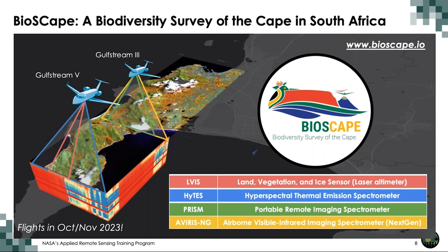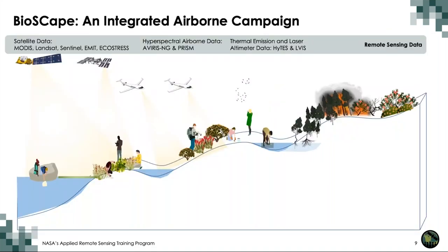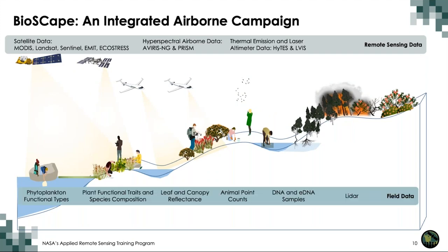BioSCAPE is an airborne campaign bringing four of the instruments you just learned about: the LVIS laser altimeter, HyTES, PRISM, and AVIRIS-NG. Those will be aboard two NASA aircraft — the Gulfstream III and the Gulfstream V — flying around the region this October and November, collecting imagery in combination with a rich set of field observations. On the ground, while the planes are in the sky, teams will be recording phytoplankton functional types by taking water samples and identifying functional groups, and teams on land will be looking at plant functional trait and composition — measuring things like leaf size, leaf thickness, and which species are present across the landscape.